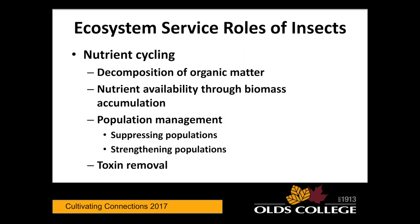A grower south of Calgary put in 15 acres of black currants and didn't understand why for three years they stayed really, really stunted. A soil test revealed the herbicide history — there was a 20-year residual activity of herbicide that had been used on that land — so their bushes, instead of being productive in three years, weren't productive for seven years. You need to try to clean up your lands as much as possible.